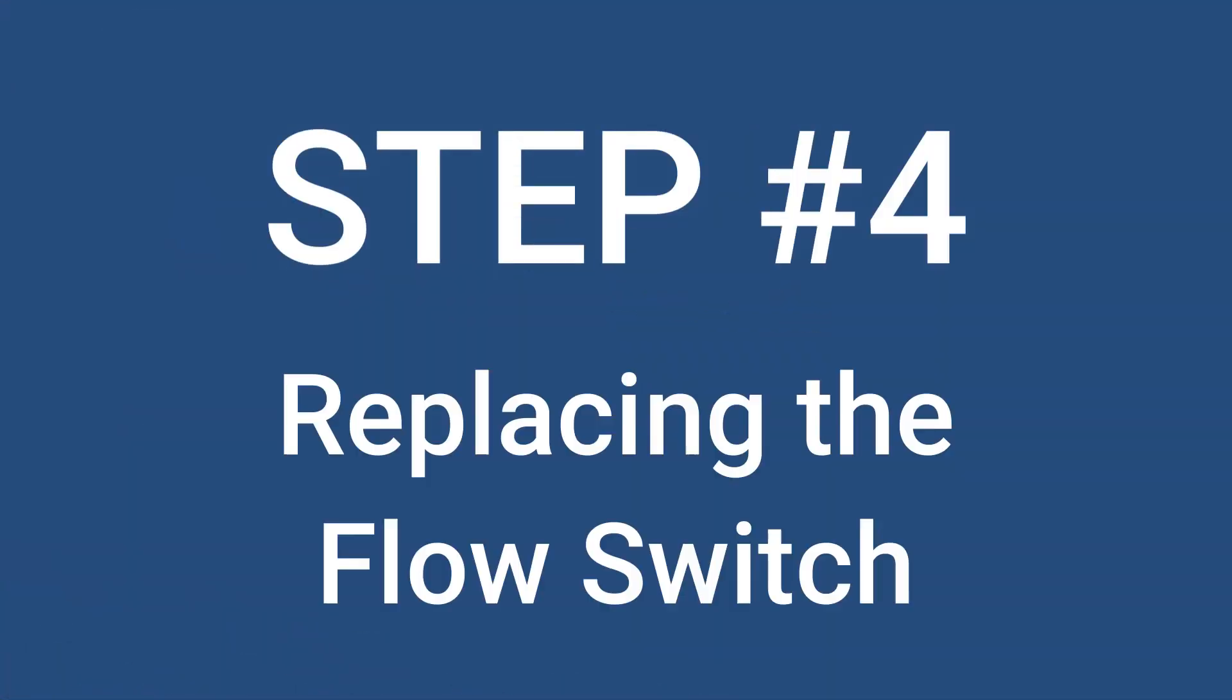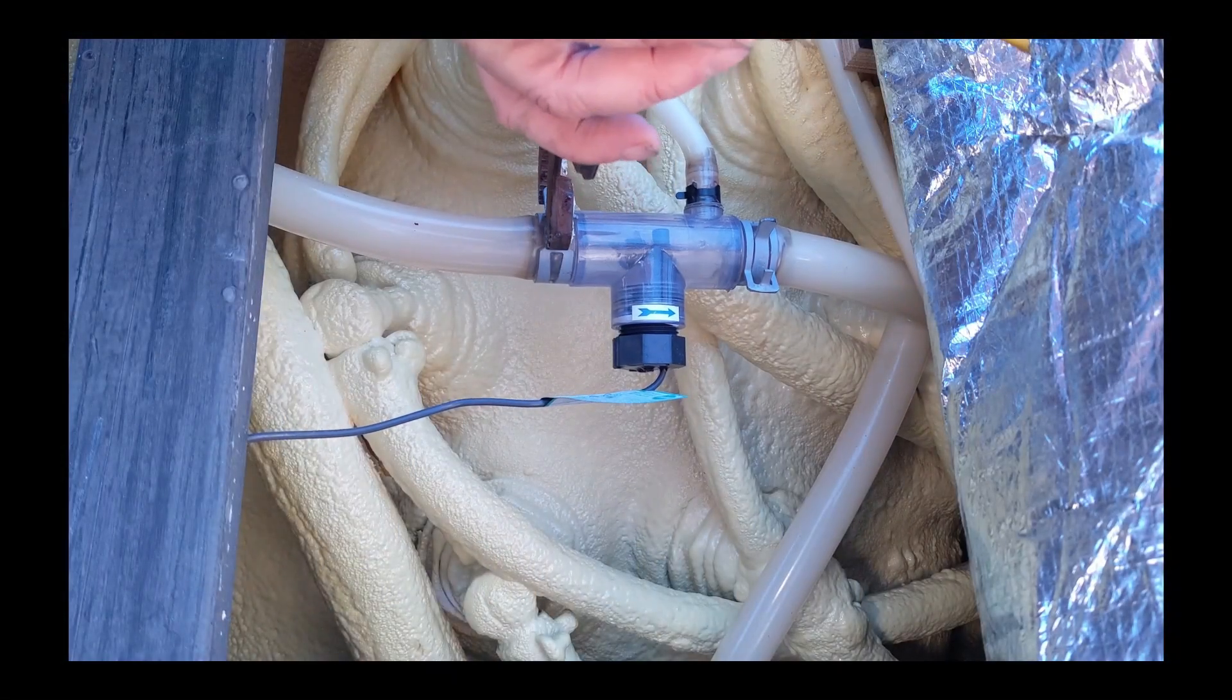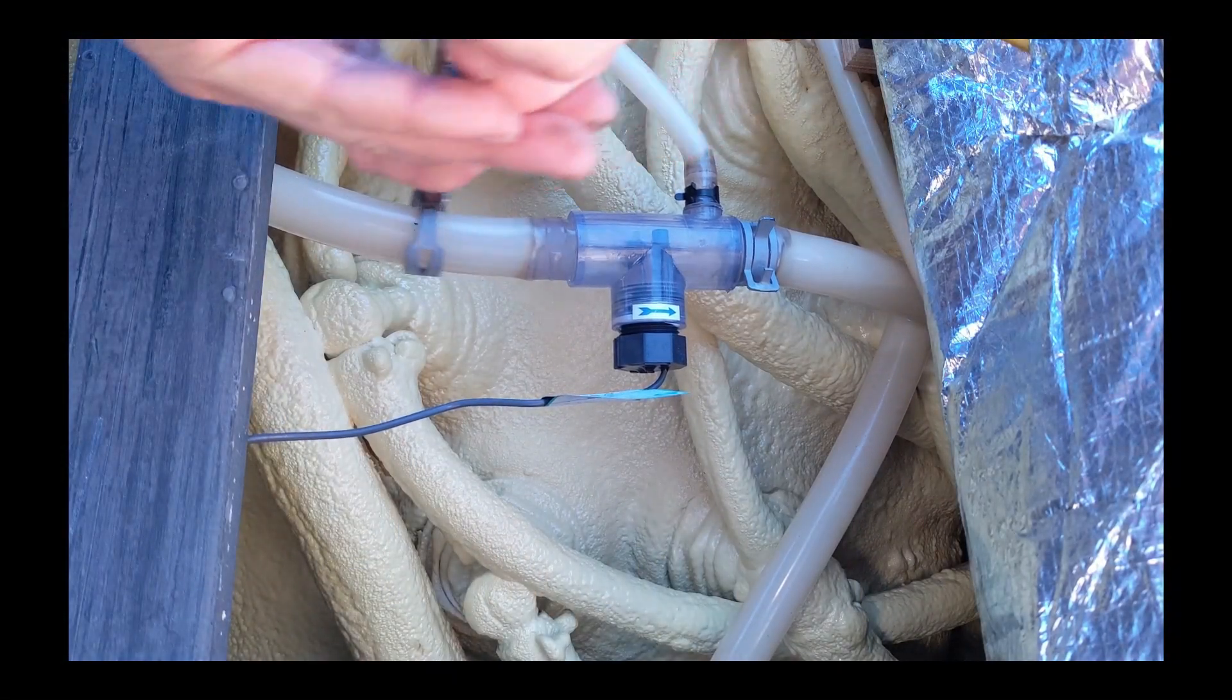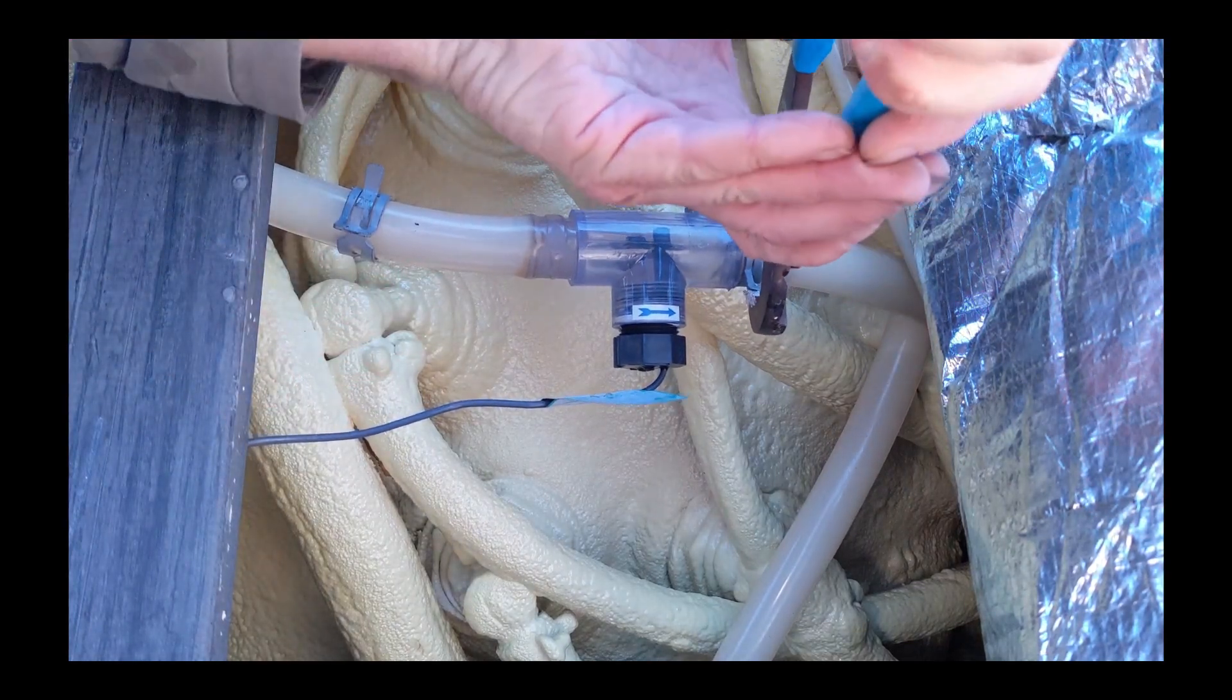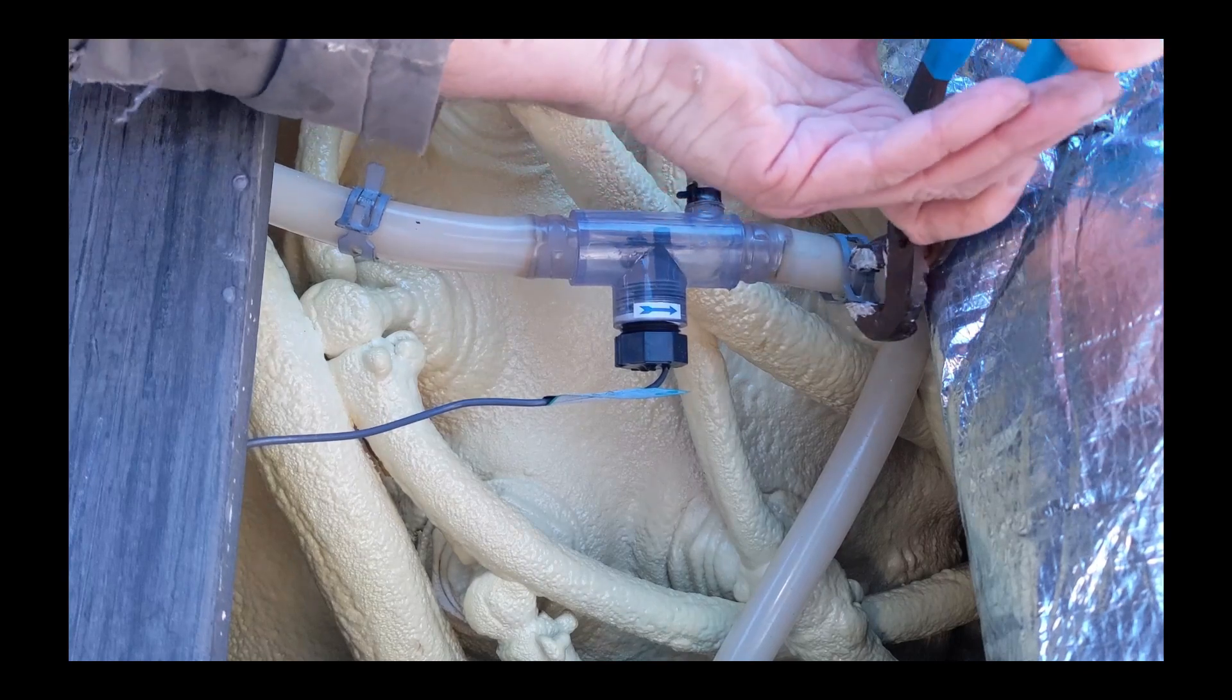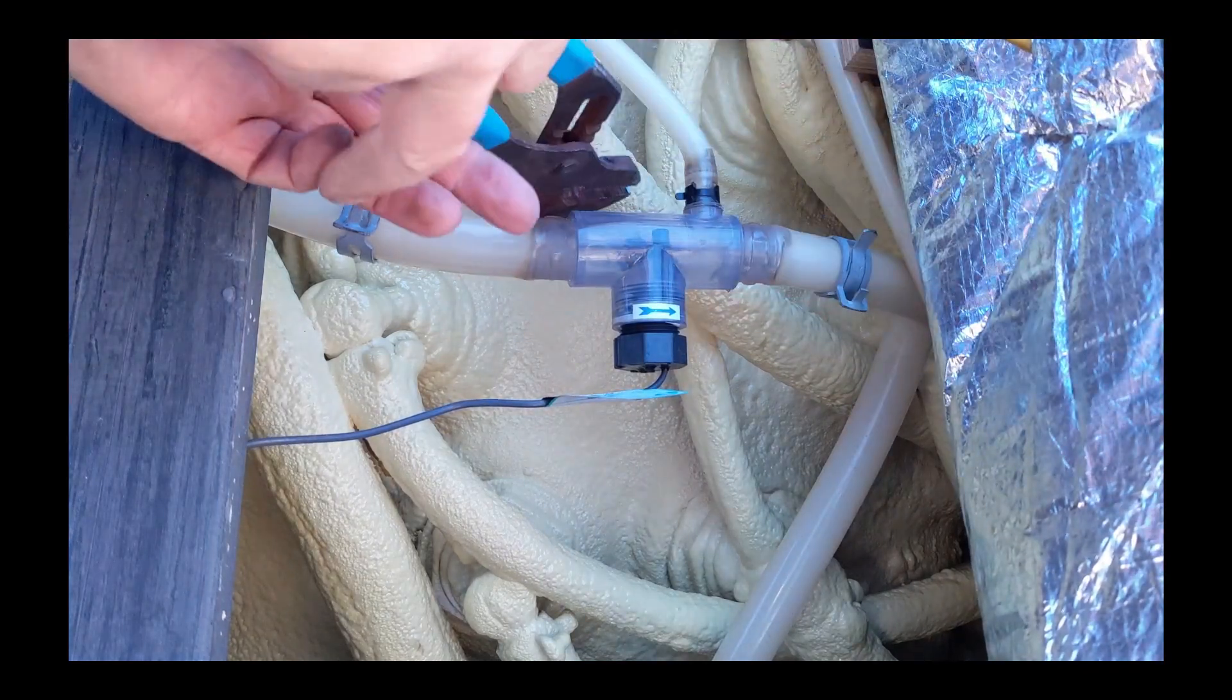Step 4: replacing the flow switch. Locate your flow switch and start taking the clips off. For this jacuzzi hot tub, I had to tarp it and put a heater underneath it because it was way too cold outside. Just a little easier to work on stuff when it's warmer.